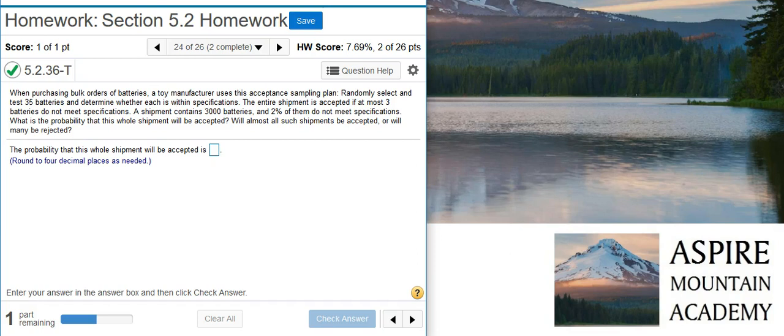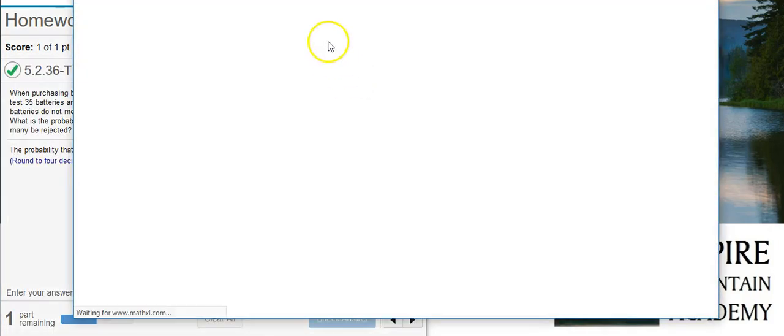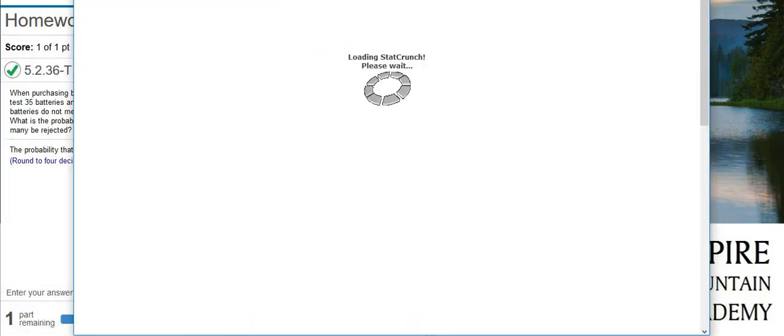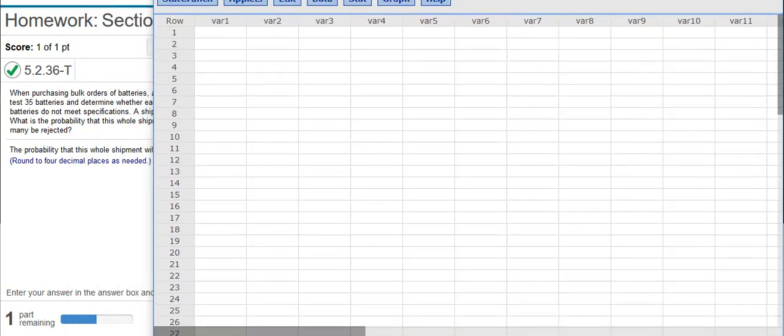Okay, the first part of this problem is asking us to calculate the probability that the whole shipment will be accepted. And to do that, we're going to use the binomial distribution calculator in StatCrunch. So, first we need to pull up StatCrunch. I can do that here. I'm going to pop this window out. Then I'm going to resize it so we can see a little bit better everything that's going on here.